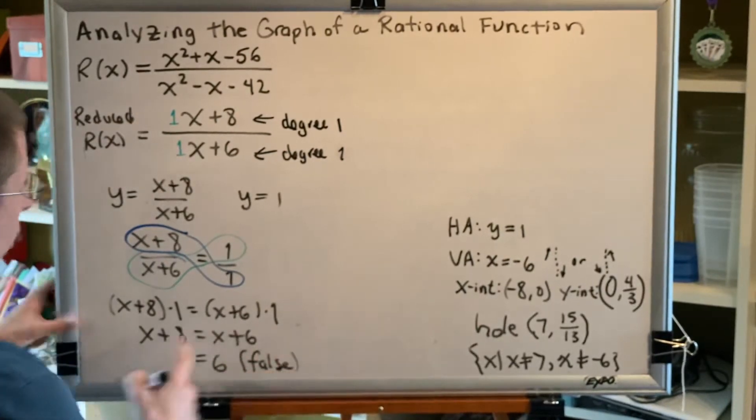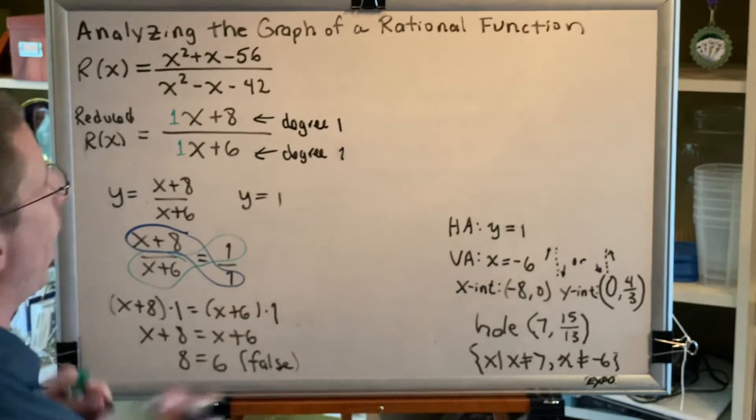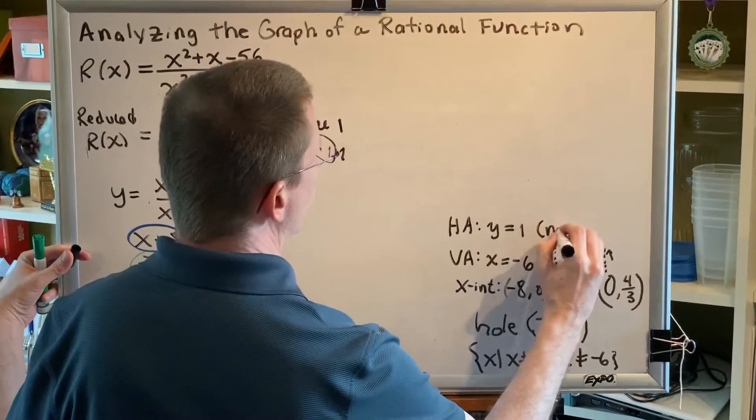The fact that this equation has no solution means that there is no place on our graph where our rational function intersects our horizontal asymptote. So I'm going to write no intersection.